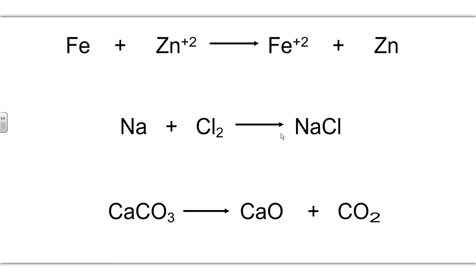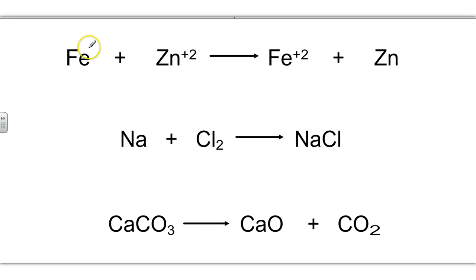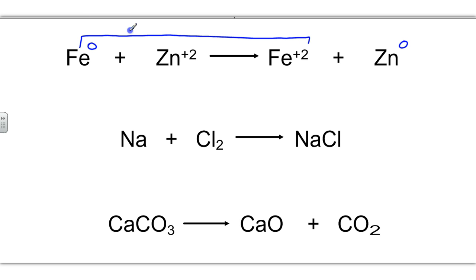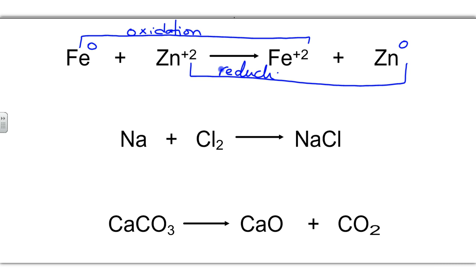Here are some examples of oxidation-reduction reactions. First we have to know the oxidation states of each element. Iron here is on its own, so it gets a zero oxidation state. Zinc has a plus two oxidation state, this iron has a plus two, and this zinc will be zero because it's a neutral element. Iron went from zero to plus two — that's an increase, so this is the oxidation part. Zinc went from plus two to zero — it reduced in value, so this is the reduction part. Because both occurred, this is a redox reaction.